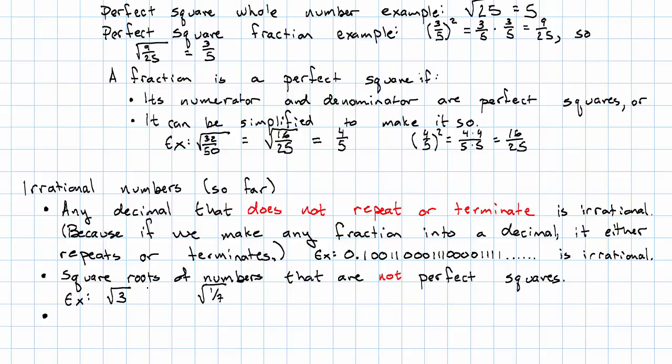There's one other very famous irrational number that bears mentioning here. The number pi, which is a number that we need in geometry. It's the ratio of the circumference of a circle, so the distance all the way around the outside, to its diameter, the distance across. This number pi is irrational.